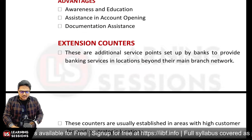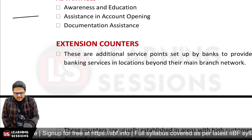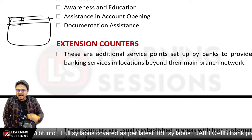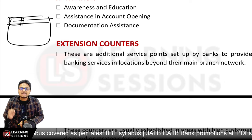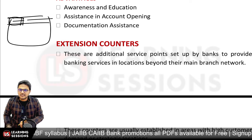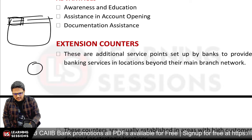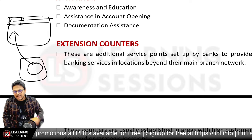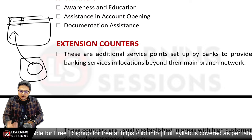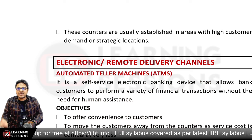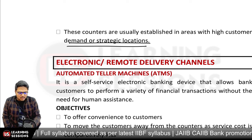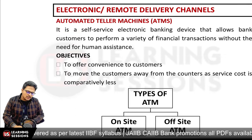Extension counters are additional service points set up by banks to provide banking services in locations beyond their main branch network. For example, a bank may open an extension counter near a university or college. These counters are established in areas with high customer demand or strategic locations, but they do not disburse loans — they can handle cash transactions.